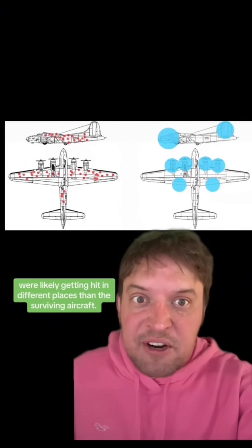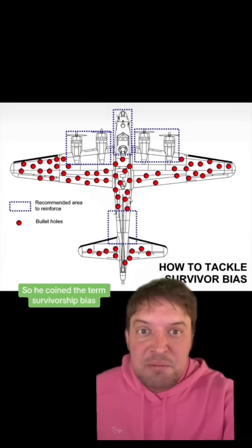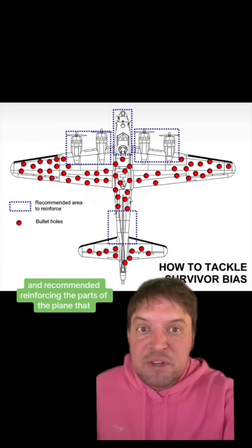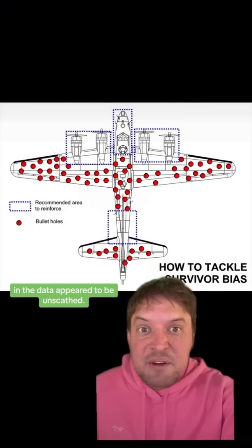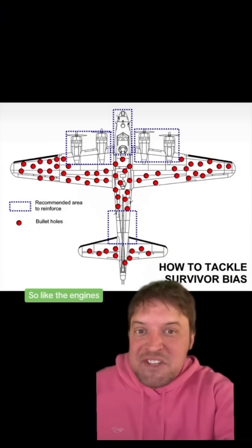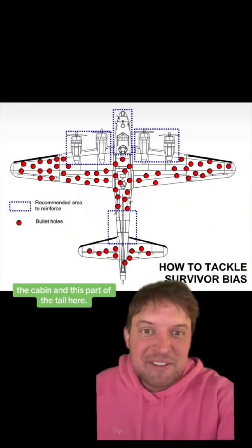So the planes that got shot down and didn't make it back were likely getting hit in different places than the surviving aircraft. So he coined the term survivorship bias and recommended reinforcing the parts of the plane that in the data appeared to be unscathed — like the engines, the cabin, and this part of the tail here.